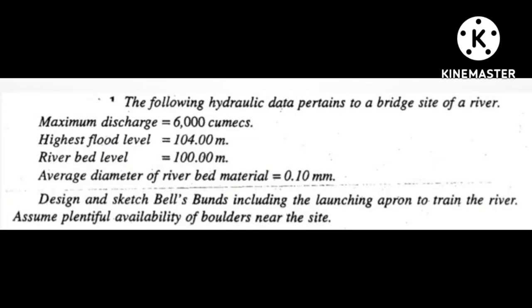The following header data pertains to a bridge site of a river. Maximum discharge is equal to 6,000 cubic meters per second. HFL is equal to 104 meters. Riverbed level is equal to 100 meters. Average diameter of riverbed material is equal to 0.1 mm.